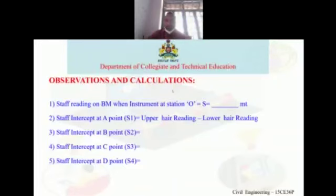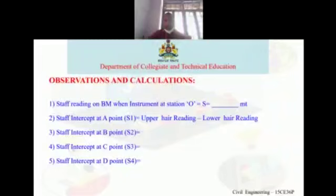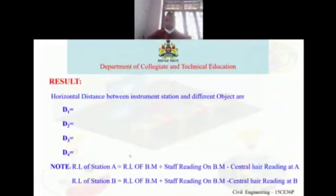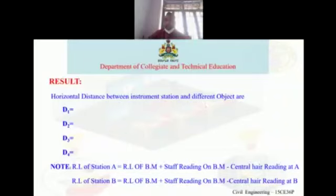The observations to be recorded are: staff reading on the benchmark when the instrument is at station O, staff intercept at point A as S1, at point B as S2, at point C as S3, at point D as S4. For the results, the horizontal distances between the instrument station and different objects are found using D = kS + c, substituting all values to find D1, D2, D3, D4.